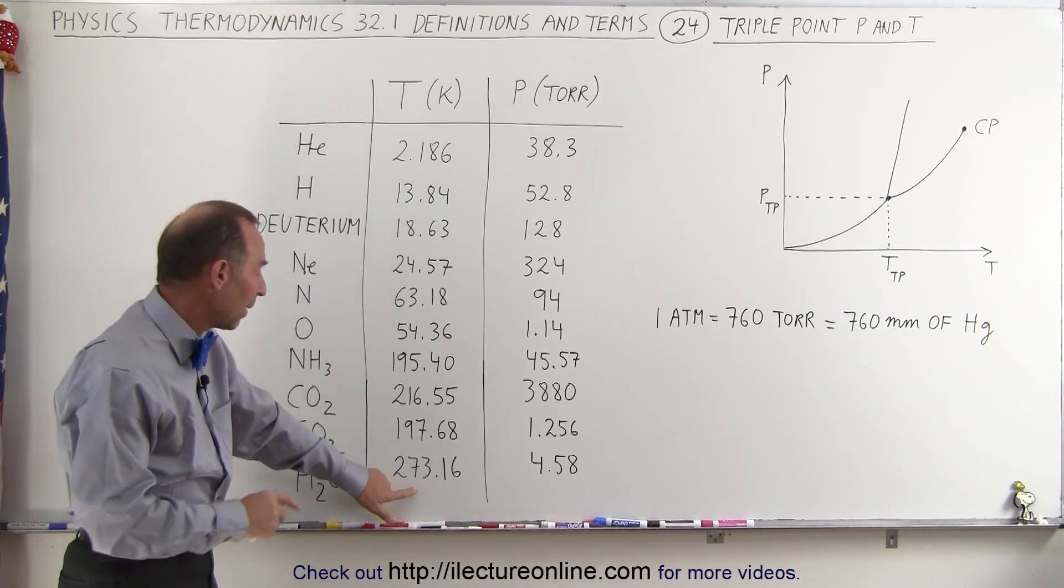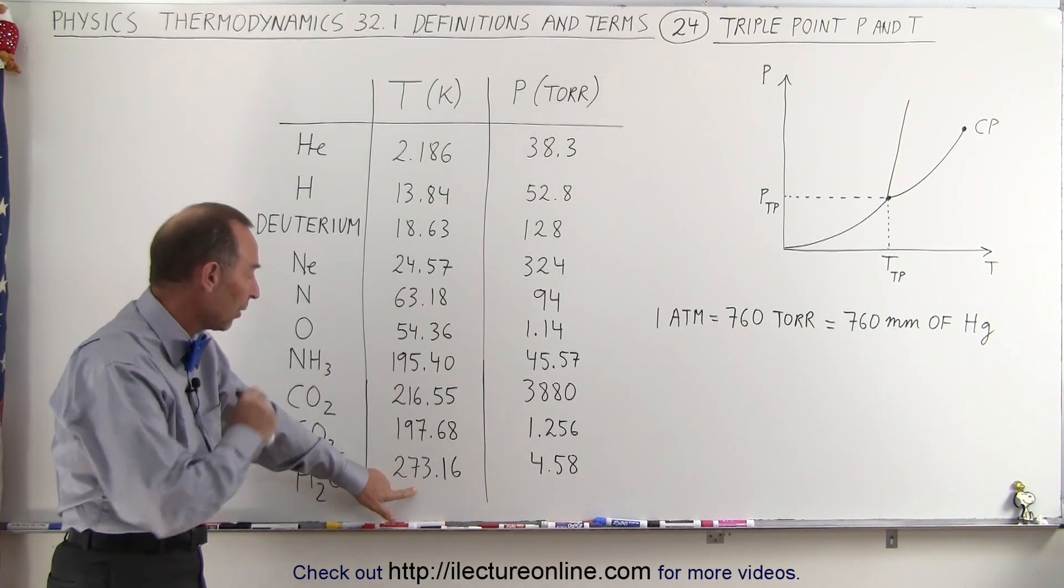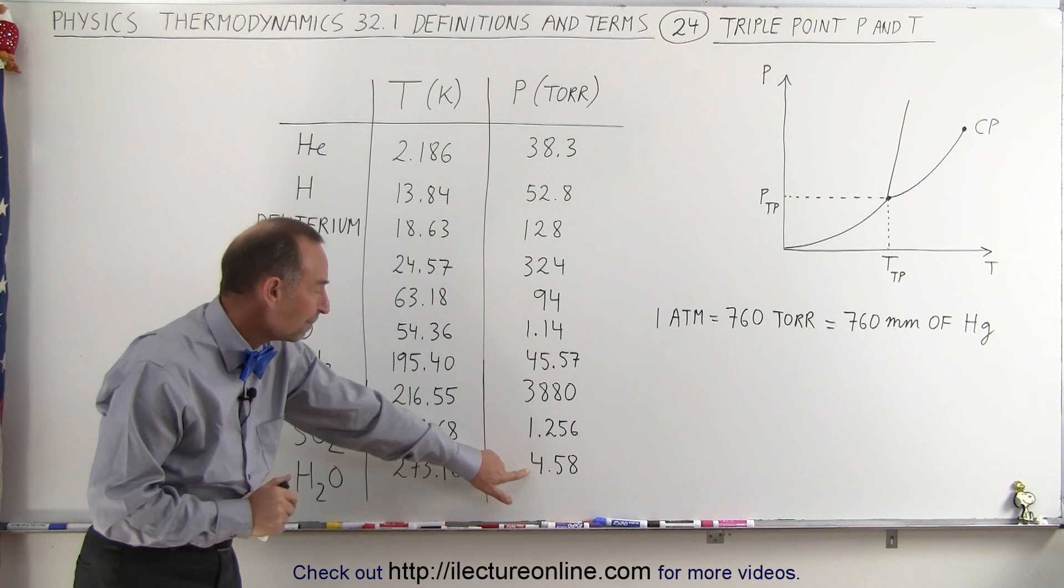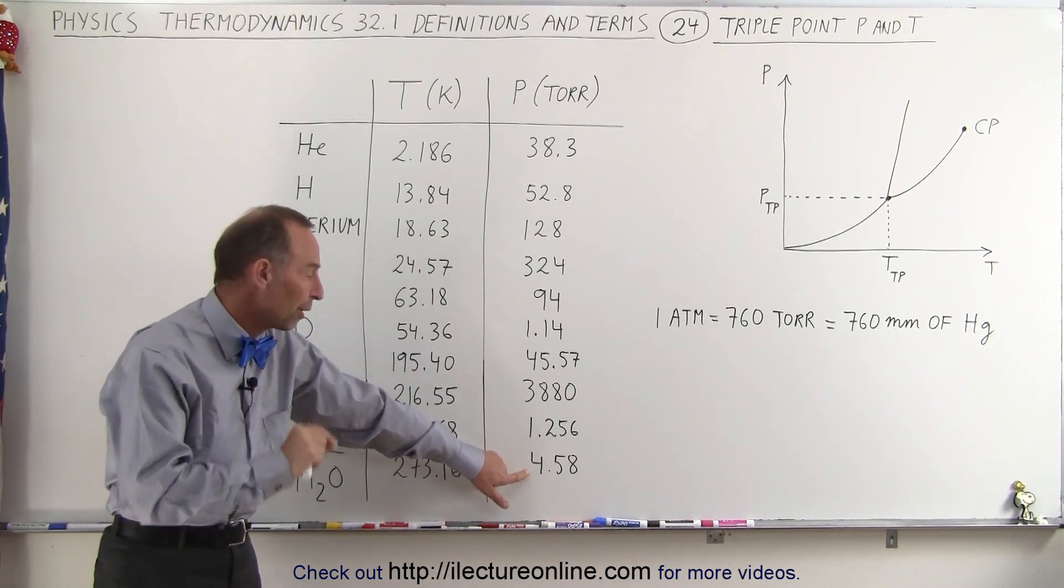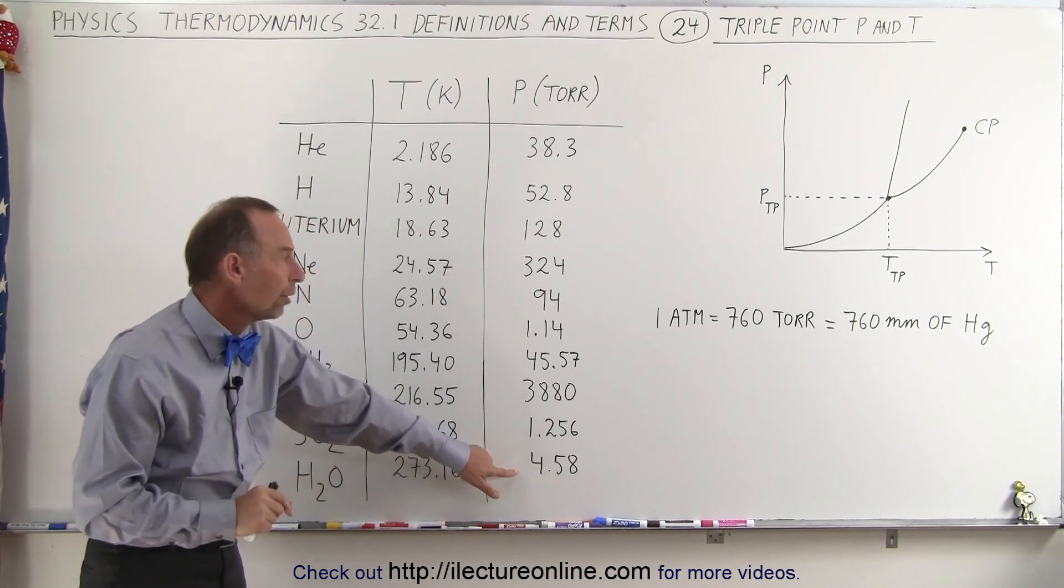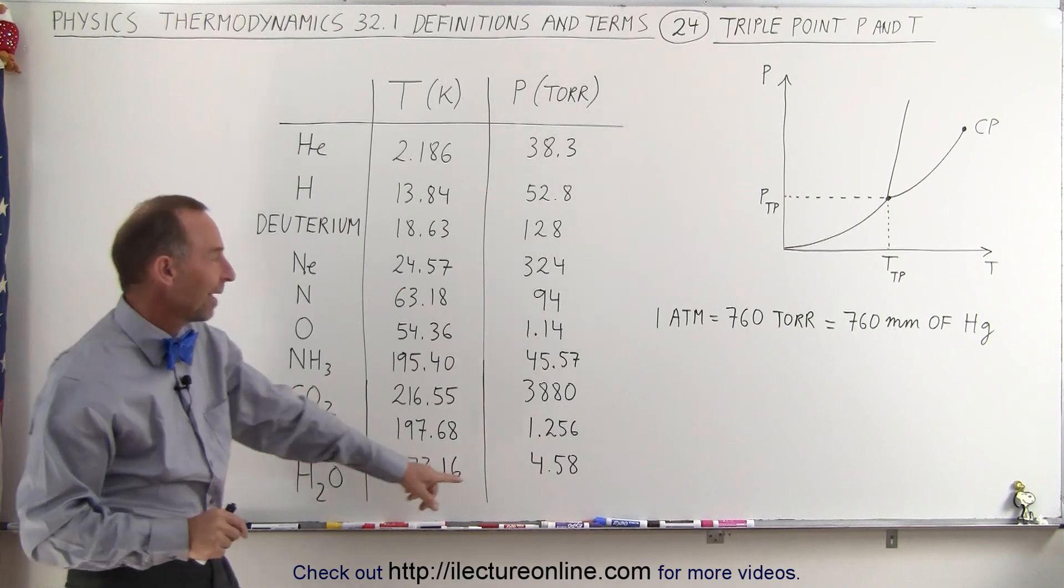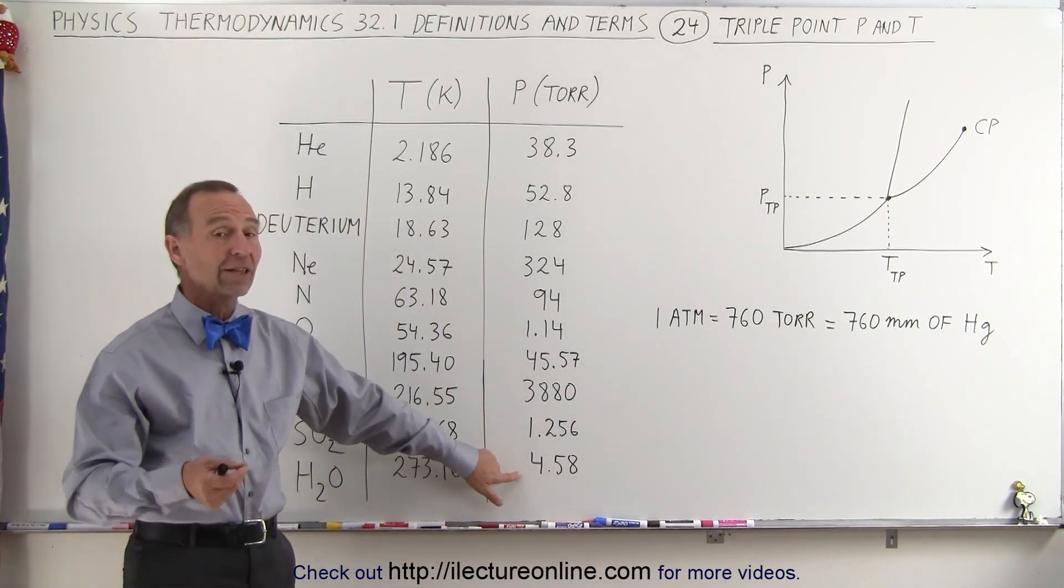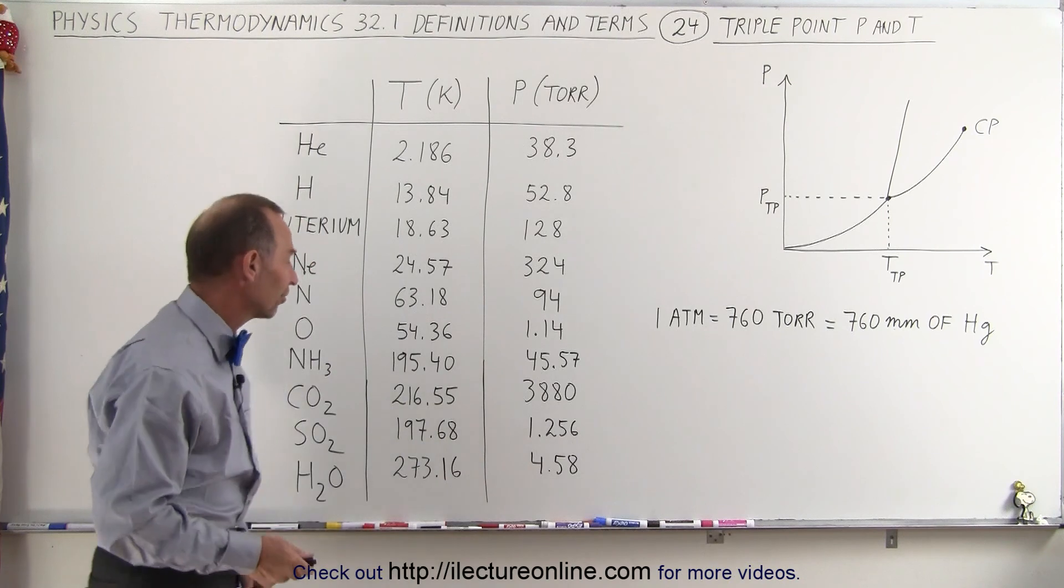It would have to be about zero degrees centigrade right around the freezing point of water and at a very, very low pressure of 4.58 tor, which is less than 1% atmospheric pressure. Matter of fact, it's even a little bit less than the atmospheric pressure on Mars.